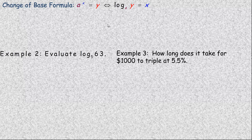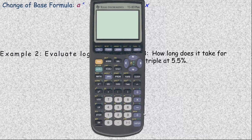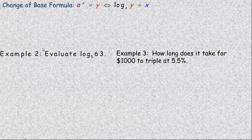One of the nice things about the power law is it leads us into something called the change of base formula. If you look at any normal scientific calculator, there is a log key, but it only evaluates the logarithm base 10. There is another one called ln, which is base e. Otherwise, there's only base 10. So I'm going to show you how you can evaluate a logarithm with a calculator that's not base 10 — that's the change of base formula.